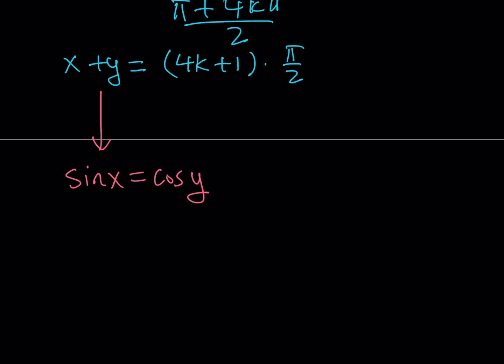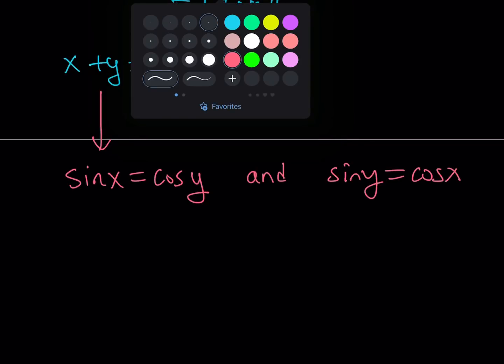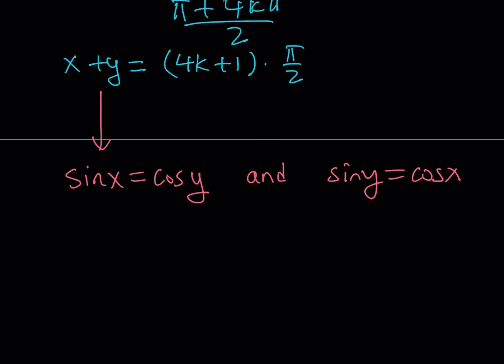And if you draw a right triangle and label two angles that are complementary, you'll notice that sine of x is going to be the same as cosine of y. And of course, it's also true that sine of y equals cosine of x. Now, we're going to use the original equations.